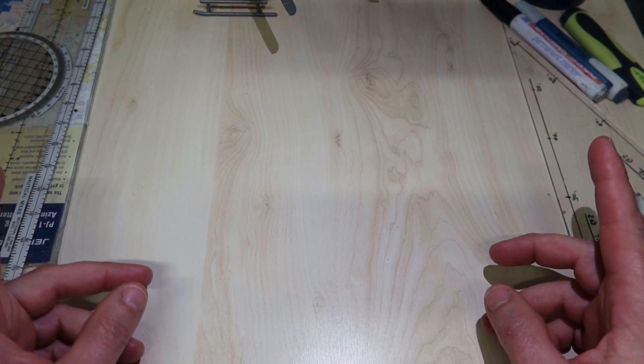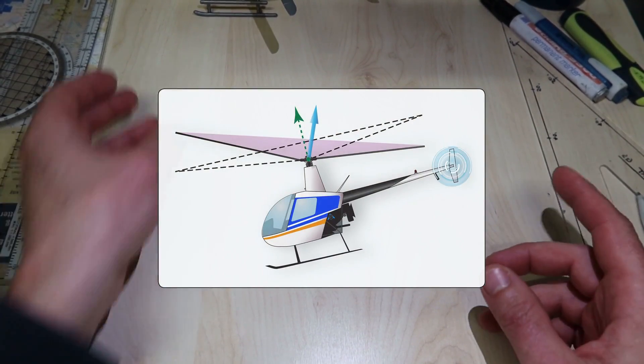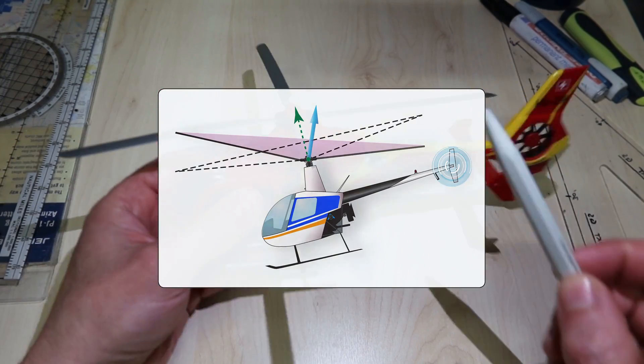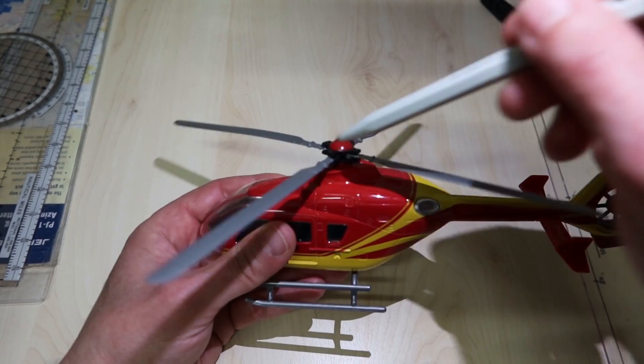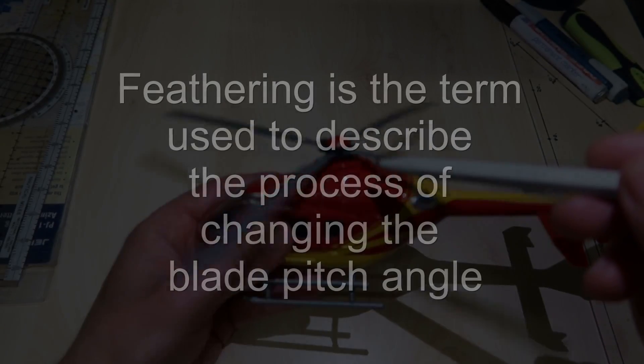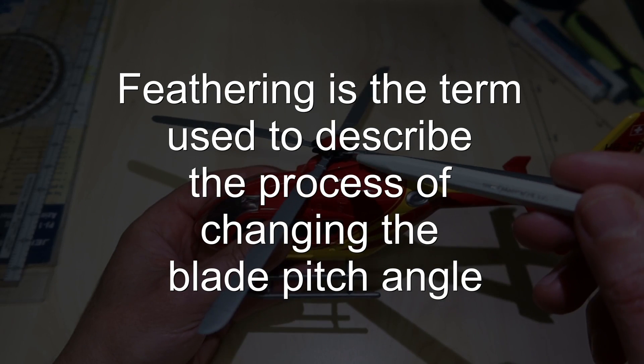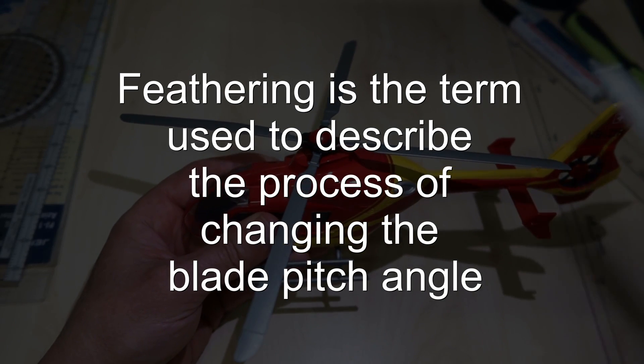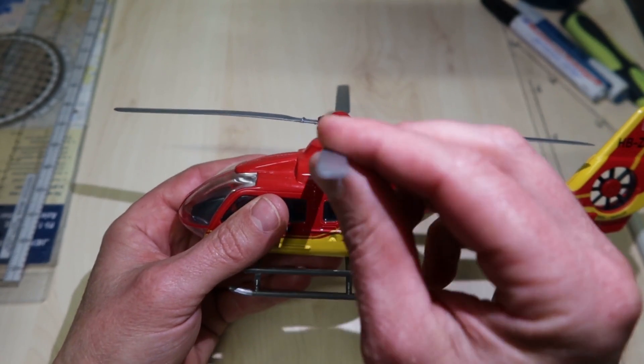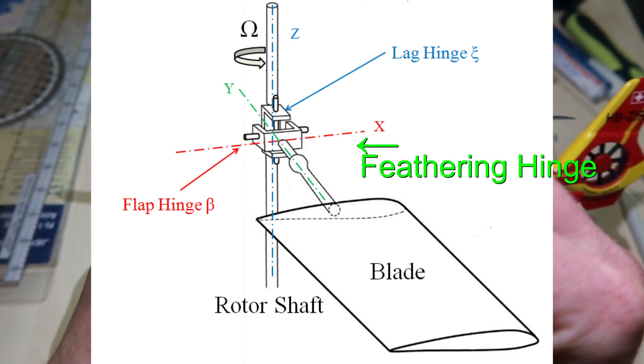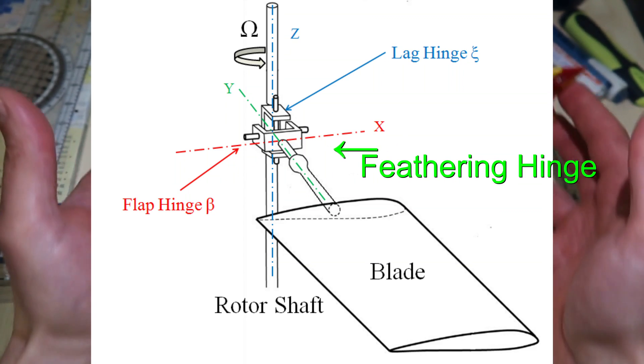Feathering - one of the requirements of a rotor system is how to alter the amount of thrust it produces. This is the function of the feathering system. Feathering is the term used to describe the process of changing the blade pitch angle. Feathering can be achieved either by using a feathering hinge or by designing a semi-rigid blade hub attachment.